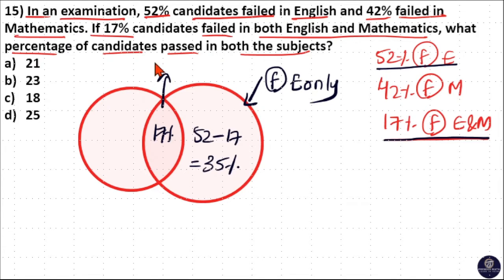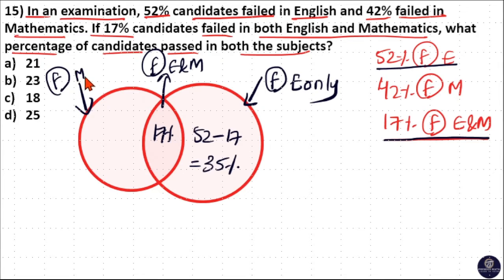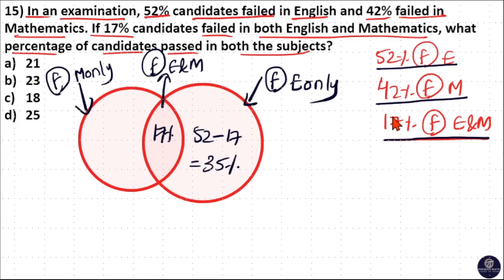The intersection represents students who failed in both English and Maths. Students who failed in Maths also include those who failed in both subjects. To find students who failed in Maths only, we subtract 42 minus 17, which gives 25%.